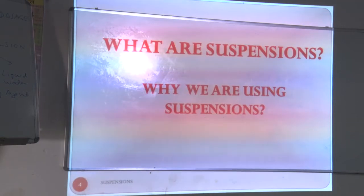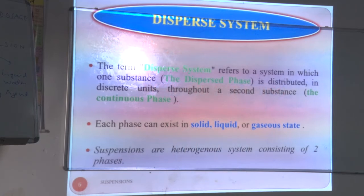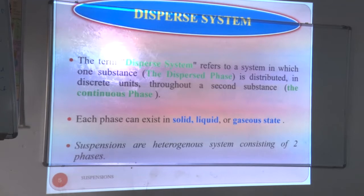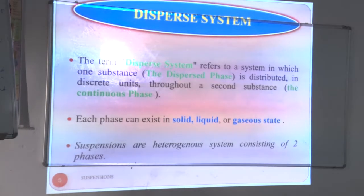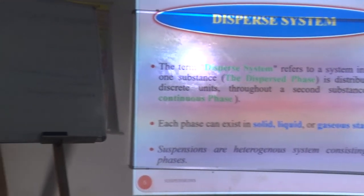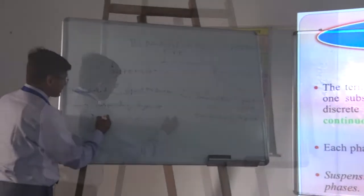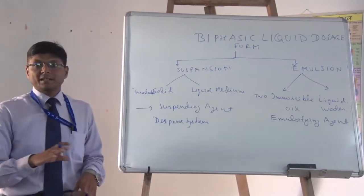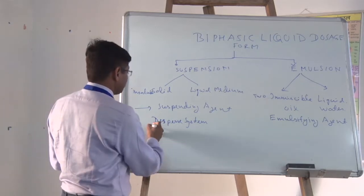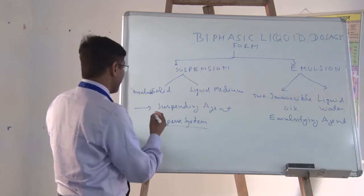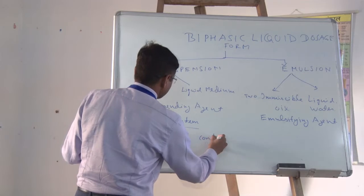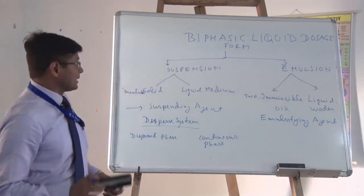As per the definition, what is suspension? It is a disperse system, referred to as a system in which one substance is distributed as discrete units throughout the second substance — the continuous phase. There are two phases: it is a disperse system because there is dispersion of solid into the liquid medium. The first phase is the disperse phase and the other is the continuous phase.